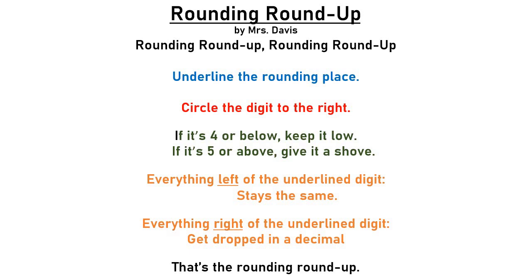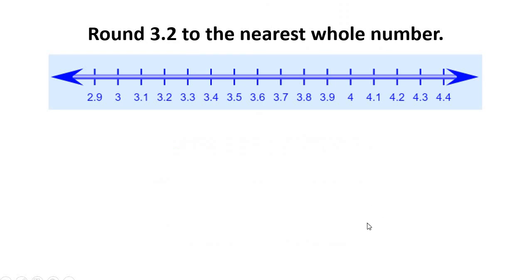So let's take a look at rounding decimals. I'm going to have you look at it with a number line first, and then I'm going to show you how that number line relates to the steps of this song. Let's start with rounding to the nearest whole number. I have the decimal three and two tenths — I'm going to find it right there. Rounding to the nearest whole number means I'm rounding to the ones place. So since I'm rounding to my ones place, the two ones that three and two tenths is in between are three and four.